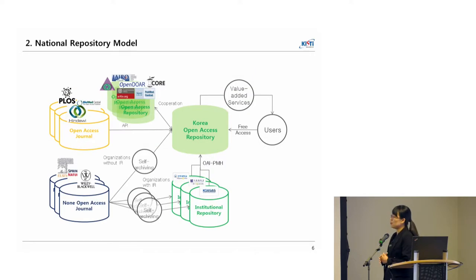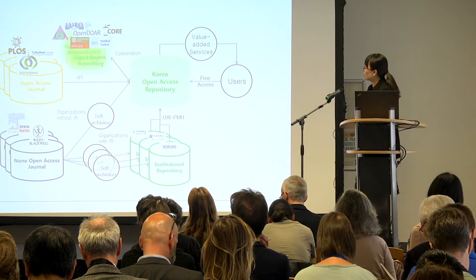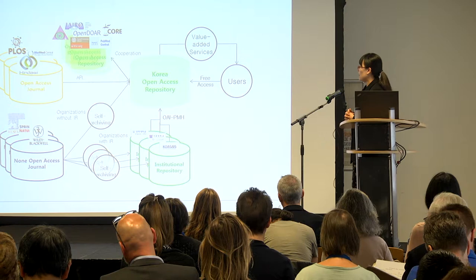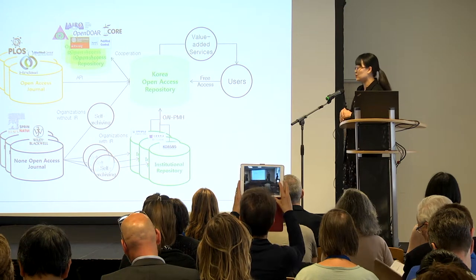This year we are going to build a national repository system, as you can see in this conceptual structure diagram. Basically, we are going to collect papers from open access journals and project reports for now, while we set up the open access policy at the national level.